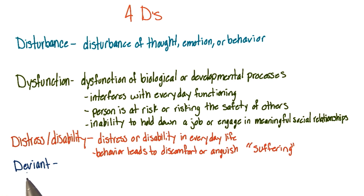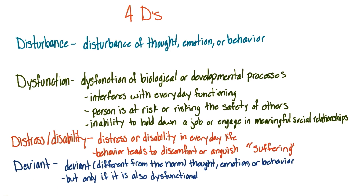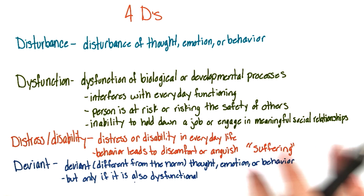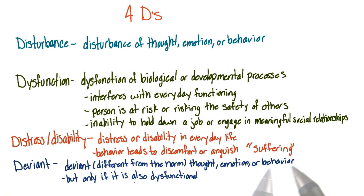And finally, for the last D, we have deviant. By this we mean deviant thought, emotion, or behavior — but only if it's also dysfunctional. Deviance alone is not enough.